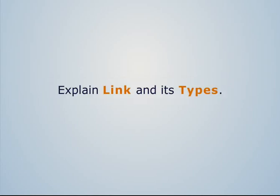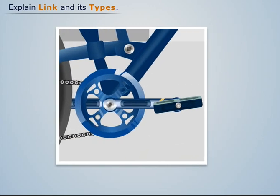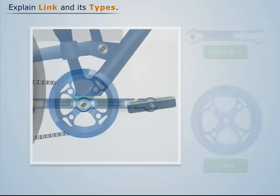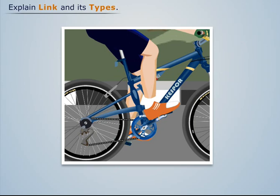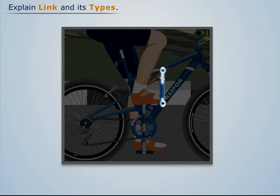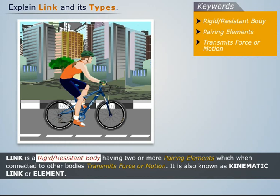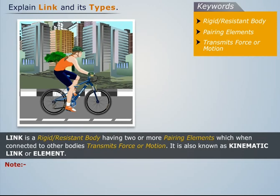Consider the pedaling section of a bicycle: the crank arm connects the crank and pedal. When a force is applied on the pedal, the crank arm transmits motion, causing the crank to rotate. The crank arm can be called a link, as it transmits motion between the pedal and crank. A link is a rigid or resistant body having two or more pairing elements which, when connected to other bodies, transmits force or motion. It is also known as a kinematic link or element.